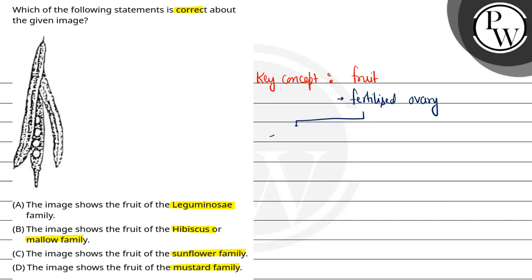Fruit three types ka hota hai: simple, aggregate, and multiple. Simple means the fruit is formed from a single flower's single ovary. Aggregate means it's formed from a single flower's several free carpels. And multiple means it's formed from a complete inflorescence. Simple fruit is further divided into two types: dry and fleshy fruit.